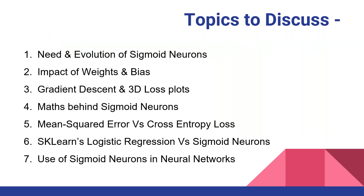These are the topics we'll be going through today. First, what is the need of a sigmoid neuron and how did they evolve? Second, what is the impact of weights and biases on the sigmoid function? Third, what is gradient descent and what are 3D loss plots - we'll visualize them. Fourth, what is the math behind sigmoid neurons? Fifth, the two main loss functions: mean squared error and cross entropy loss - we'll compare these two to see which performs better. Sixth, we'll compare sigmoid neurons with logistic regression and examine accuracy, and finally how sigmoid neurons are used in neural networks.